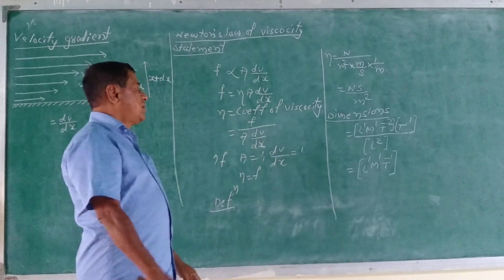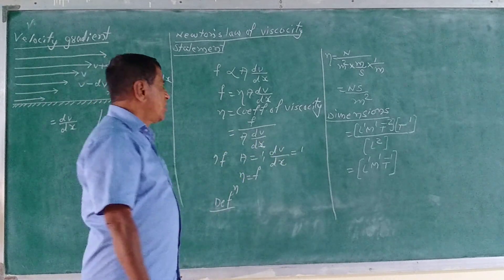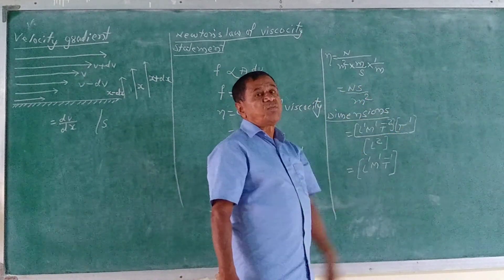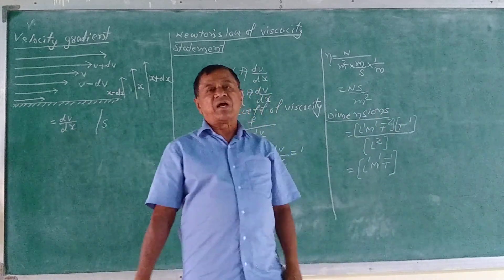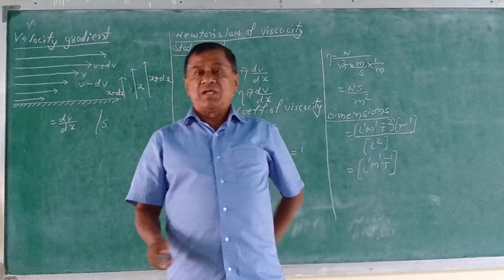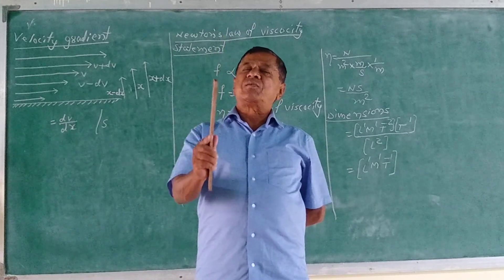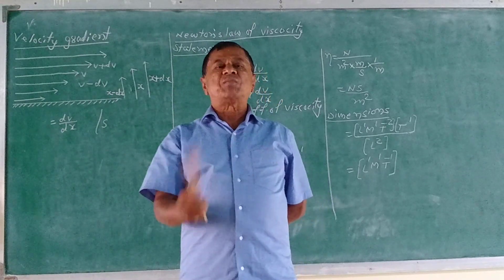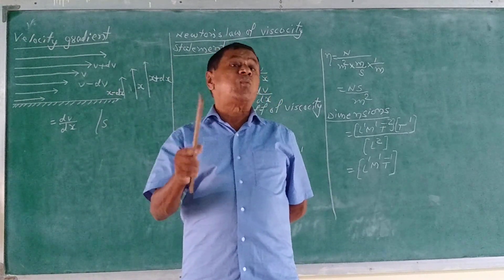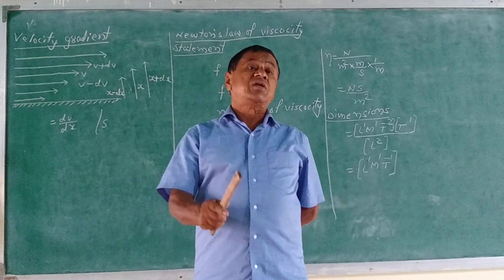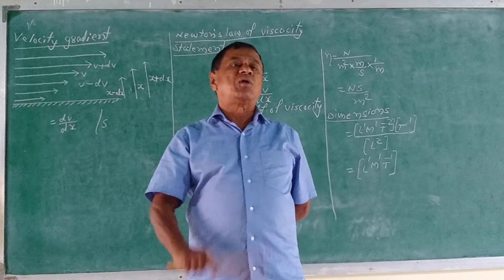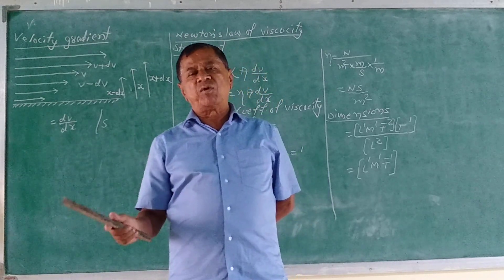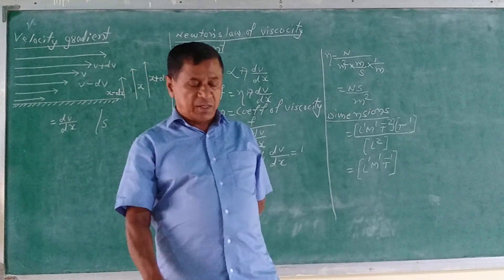The dimension is L¹M¹T⁻¹. The CGS unit of the coefficient of viscosity is poise, written as g per cm per s. The relation is: 1 Ns per m² is equal to 10 poise.